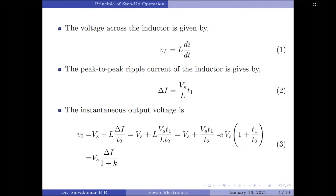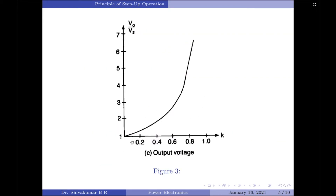This can also be written as V₀ = VS / (1 − k), where k is the duty cycle of the chopper operation. From this equation we note that the output voltage can be stepped up by varying the duty cycle k. The minimum output voltage equals VS, which occurs when k = 0. However, the chopper cannot be switched on continuously such that k = 1; for values of k tending to unity the output voltage becomes very large and is very sensitive to changes in k, as shown in the graph.